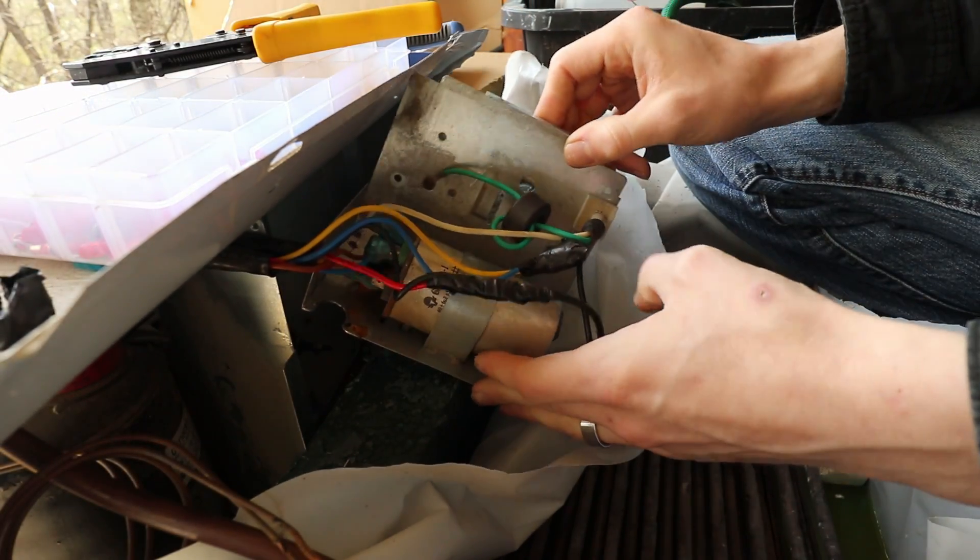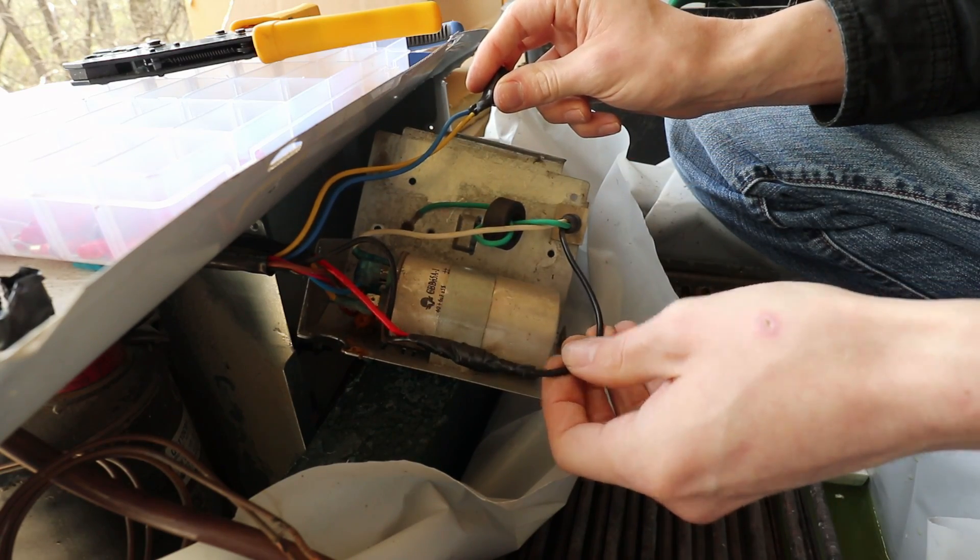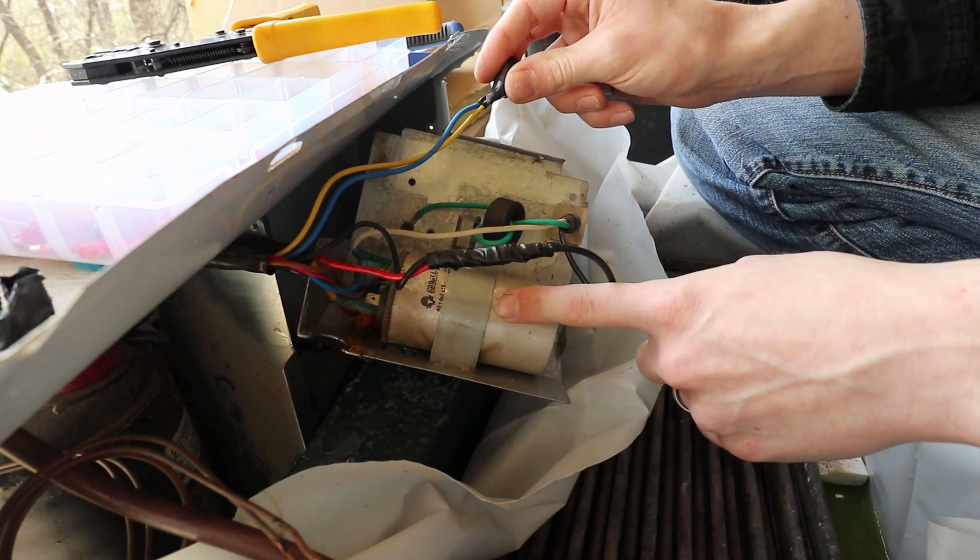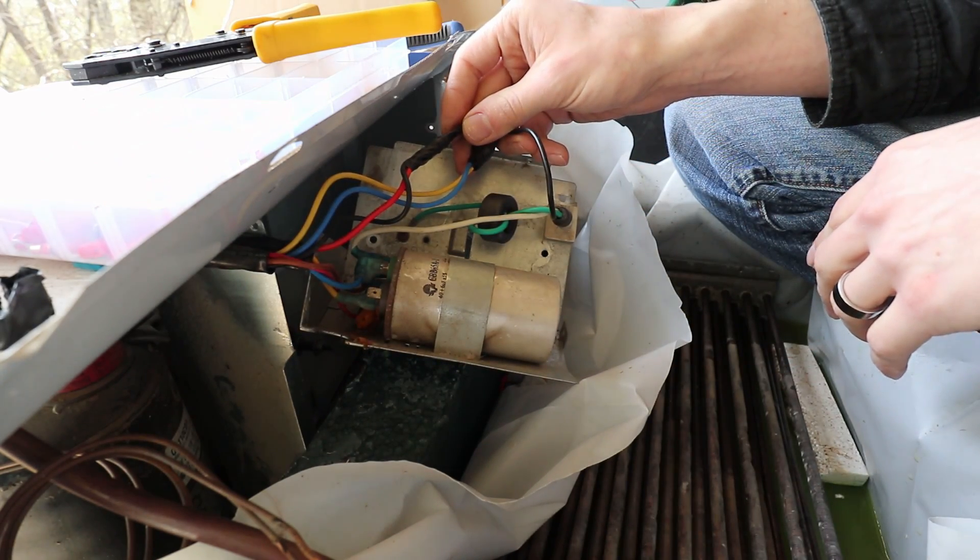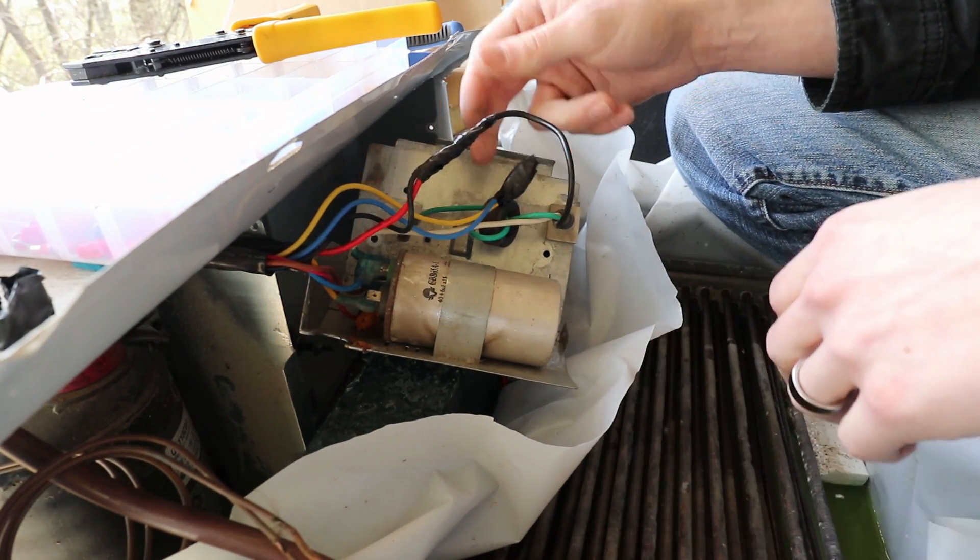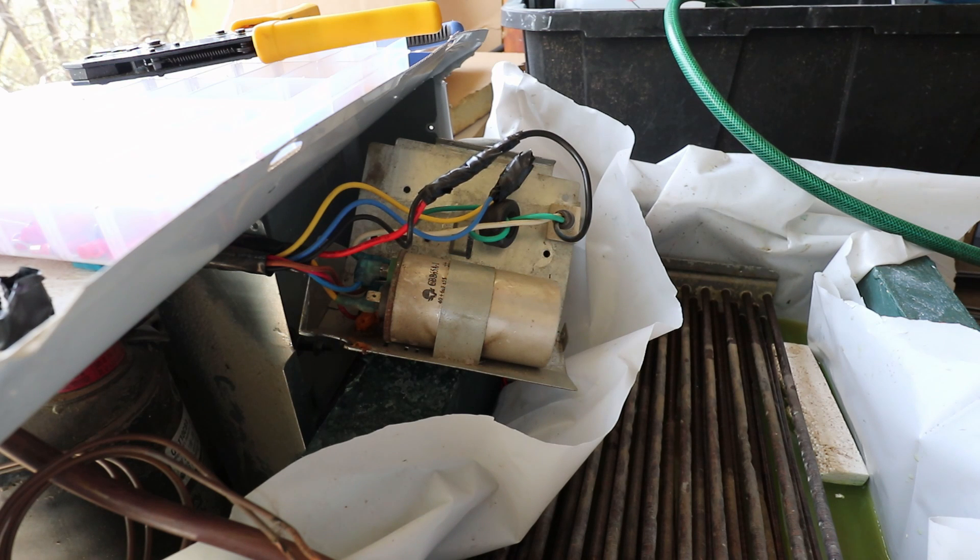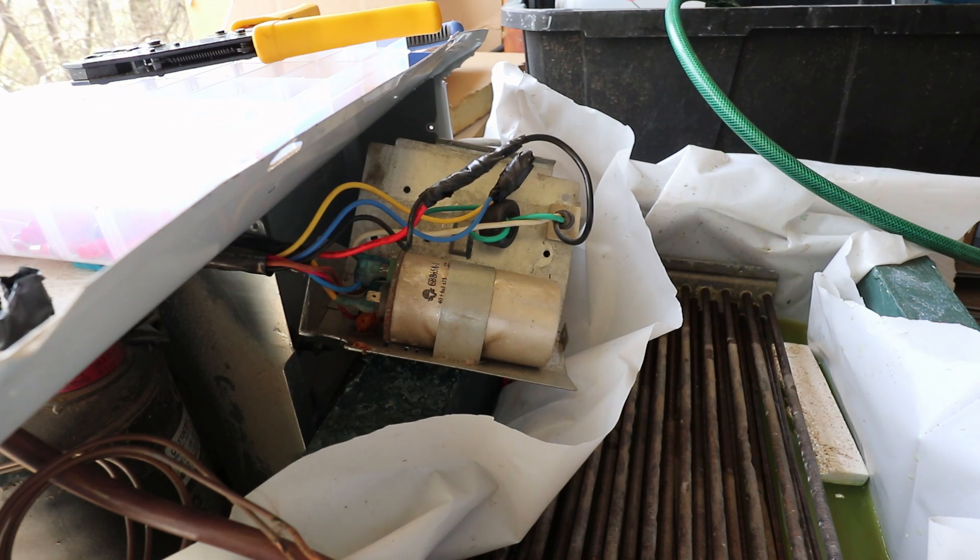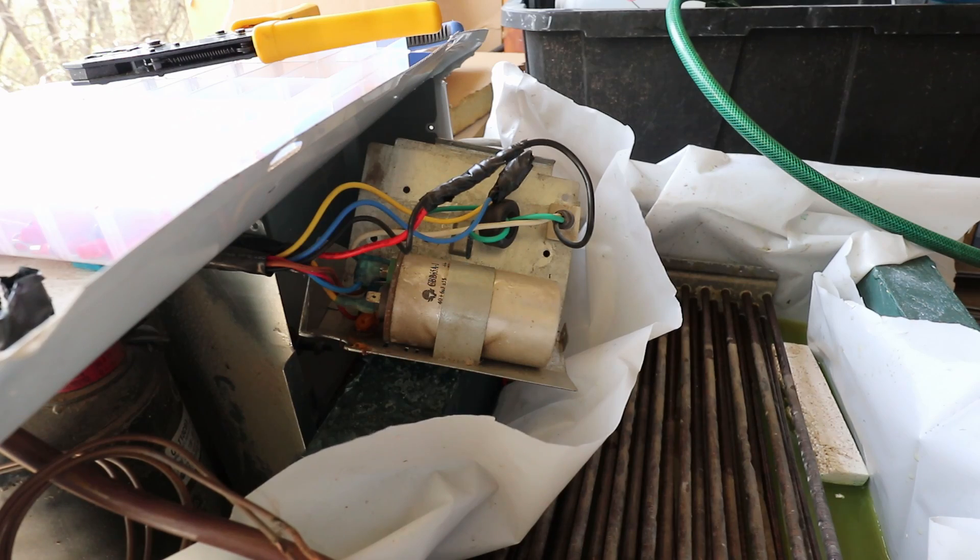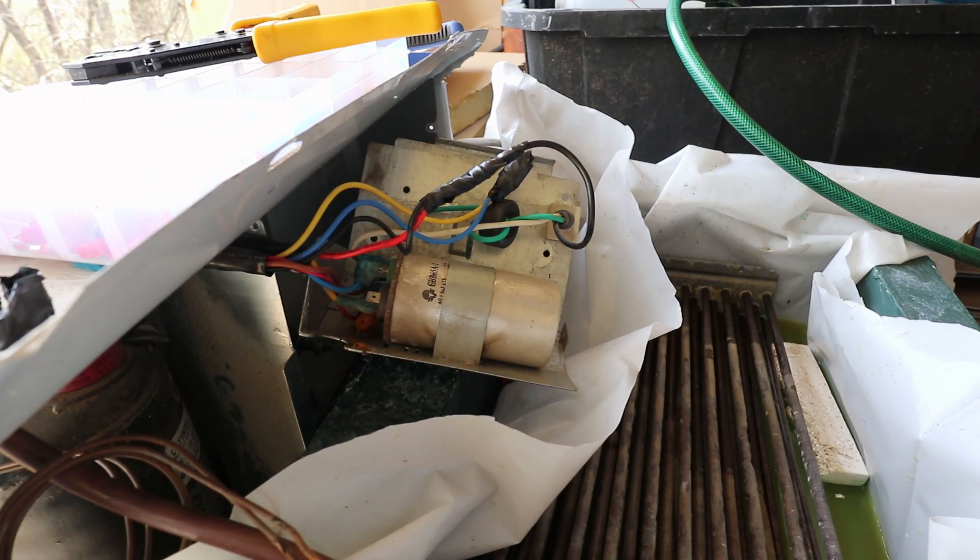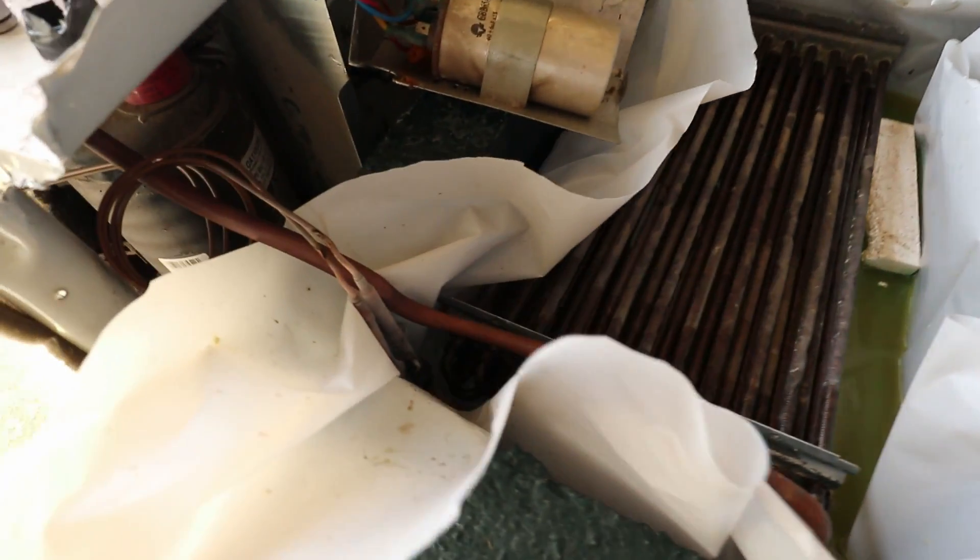Well, there we have it. All we've got now is the start and run capacitor and a couple taped up connections that had been properly crimped. So let's power it on again. We are plugged in. And here we go. You can see it's starting to frost up right there.